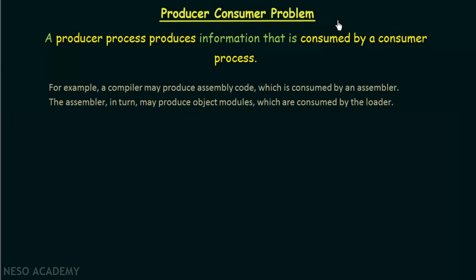To understand the shared memory concept we can take the example of the producer-consumer problem. This is a classical problem in operating systems, where a producer process produces information that is consumed by a consumer process. For example, a compiler may produce assembly code which is consumed by an assembler. The assembler in turn may produce object modules which are consumed by the loader. In the first part, the compiler is the producer and the assembler is the consumer; in the second part, the assembler is the producer and the loader is the consumer.